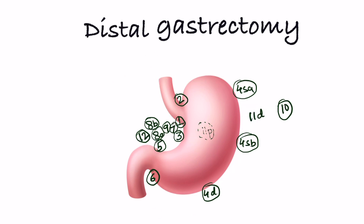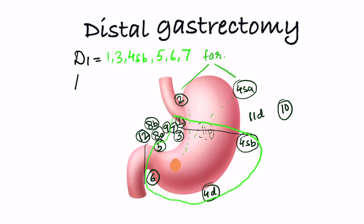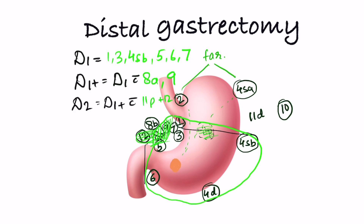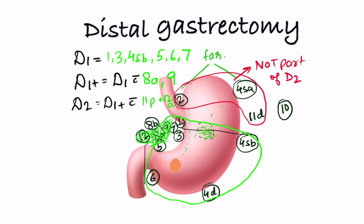In the case of distal tumor where distal gastrectomy is done, stations 2 and 4SA are far from the tumor and less likely to have malignant cells, so they are not included in D1. D1 for distal gastrectomy is stations 1, 3, 4SB, 4D, 5, 6, and 7. D1 plus adds 8A and 9. D2 is D1 plus with 11P and 12A. Stations 2, 4SA, and 11D are not part of D2 in distal gastrectomy as they are far from the tumor.